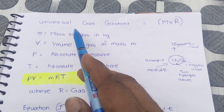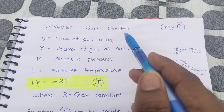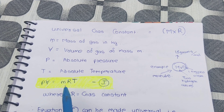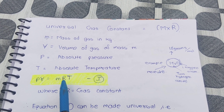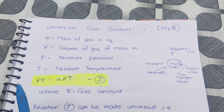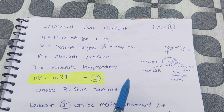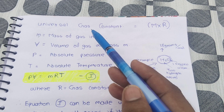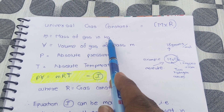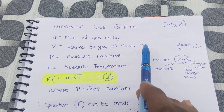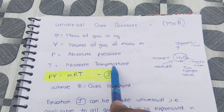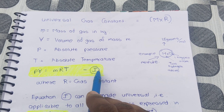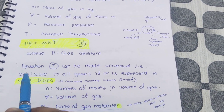Today we will study about the universal gas constant. The universal gas constant is nothing but a product of M into R. In the previous session we discussed the gas constant R, and the equation we got was pV = RT. Here we need to derive the universal gas constant M into R, where m is the mass of gas in kilograms, V is the volume of gas of mass m, p is absolute pressure, and T is absolute temperature. So pV = mRT — this is equation one, where R is the gas constant.